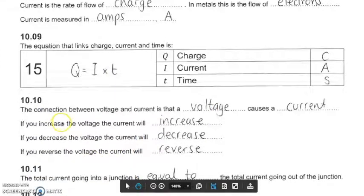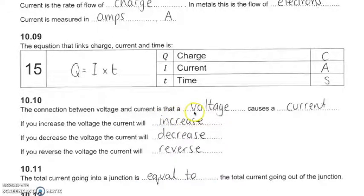The connection between voltage and current is that voltage causes a current. If you increase the voltage, the current will increase. If you decrease the voltage, the current will decrease. If you reverse the voltage, the current will also reverse. Voltage is essentially that driving force that pushes the electrons around the circuit.